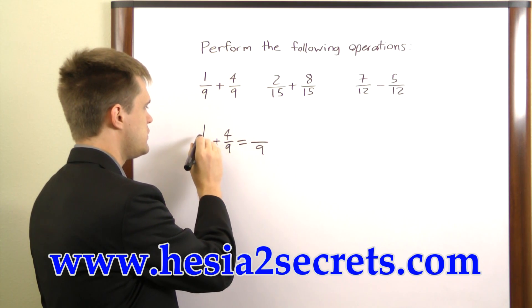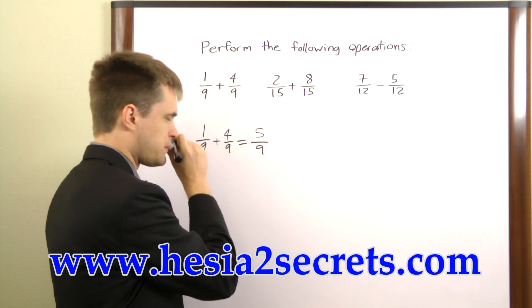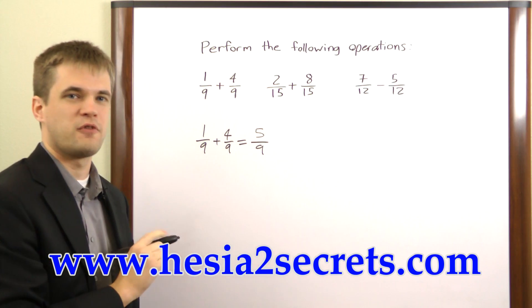Then for the numerator all we have to do is add these two numerators. 1 plus 4 equals 5, so that's our solution, 5 over 9.